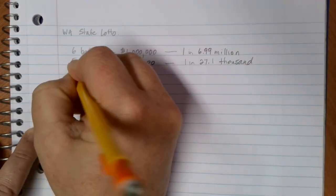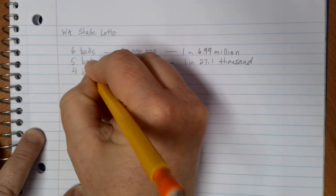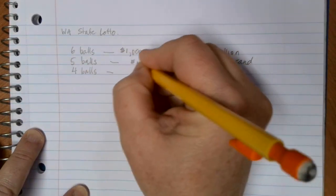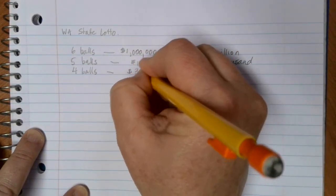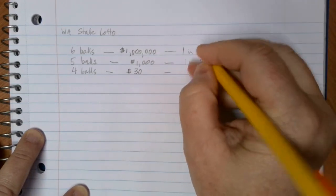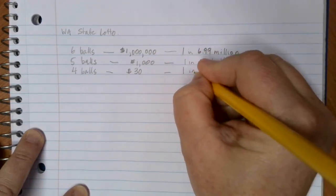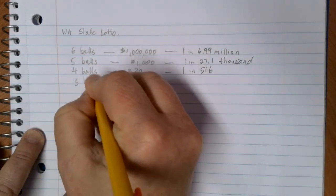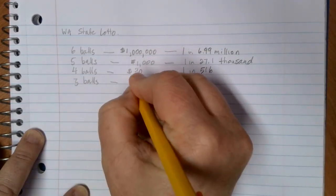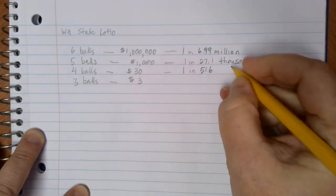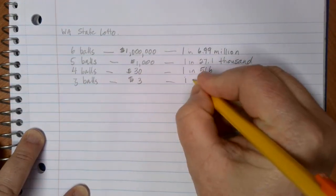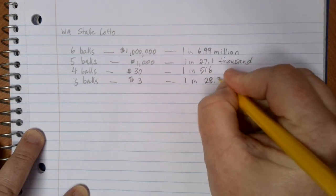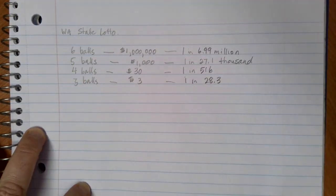If you get four of the balls picked correctly, there's a $30 prize, and there's a 1 in 516 chance of that happening. Or if you get three balls correct, then you win a $3 prize. That's much more likely to happen, so there's a 1 in 28.3 chance of that occurring.